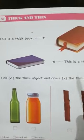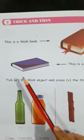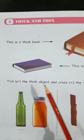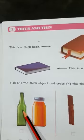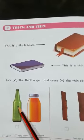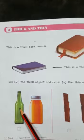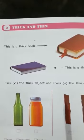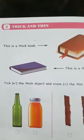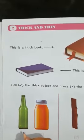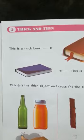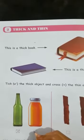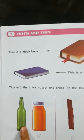It is smaller in size too. Now they are asking us to tick the thick object and cross the thin object. This is thin because it is smaller in size, smaller in width. So it is thin, so you have to put a cross here. And this is thick in size because it contains a lot of capacity, more capacity, rather than this bottle.